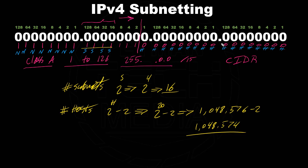Moving the cut line to the right is known as subnetting — breaking a large network into smaller subnetworks. Moving the cut line to the left is known as supernetting — consolidating subnets into fewer subnets, each having more IP addresses. For the new subnet mask with /15: the first octet is 255. In the second octet, 7 bits are on and 1 is off, so 255 minus 1 equals 254. The new subnet mask is 255.254.0.0.